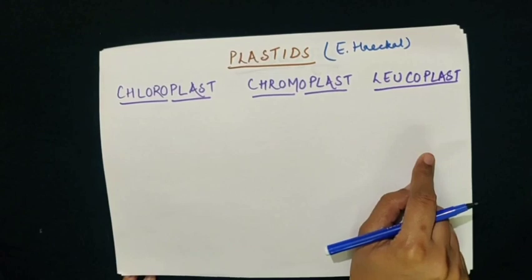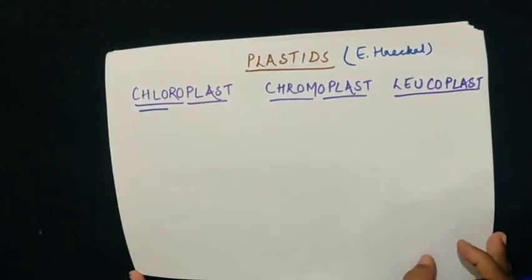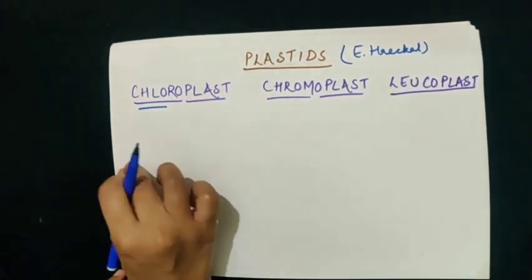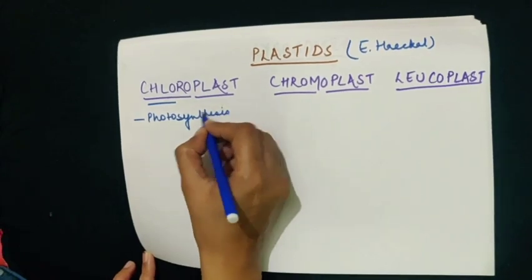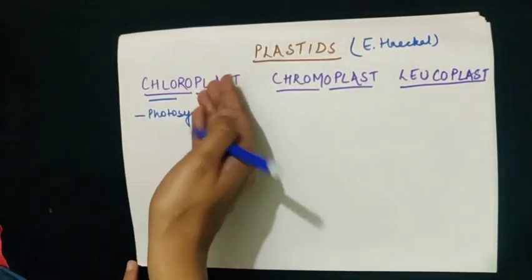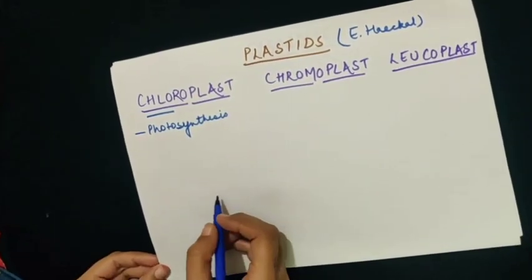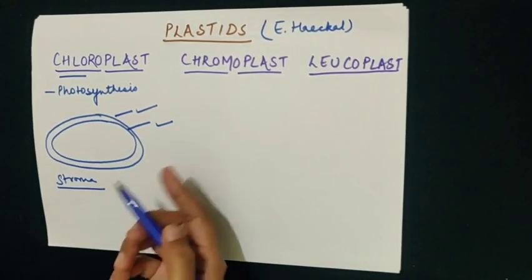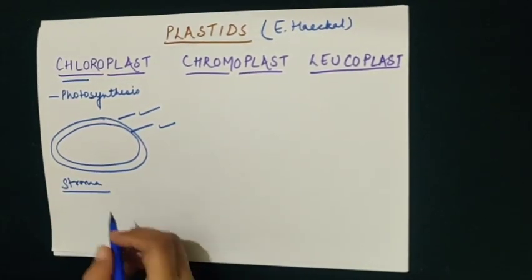The first one is chloroplast. As the name suggests, 'chloro' is for chlorophyll. These are basically green colored plastids which provide green color to plants and, since they have chlorophyll, they help in photosynthesis. You have learned from your earlier classes that due to the presence of chlorophyll, green plants are able to perform photosynthesis. The chloroplast has got two membranes — an outer membrane and an inner membrane — and like mitochondria has a mitochondrial matrix, chloroplast also has a matrix called the stroma.